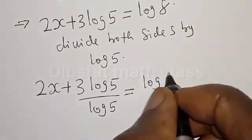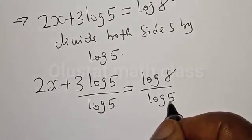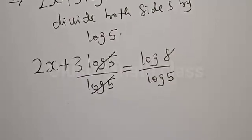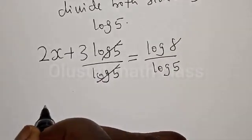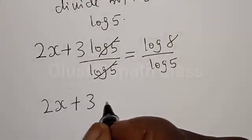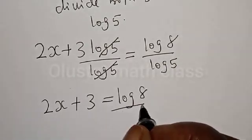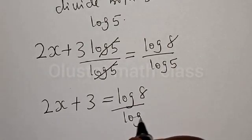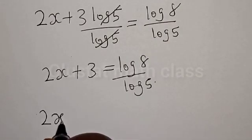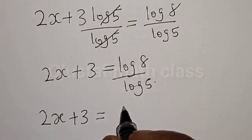This gives us 2s plus 3 is equal to log 8 divided by log 5. We have 2s plus 3 is equal to log 8 divided by log 5, which is 1.29203.